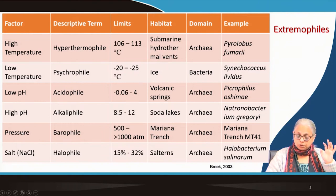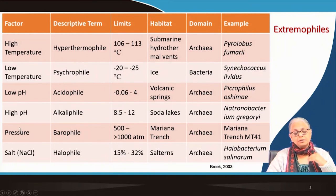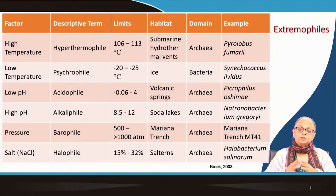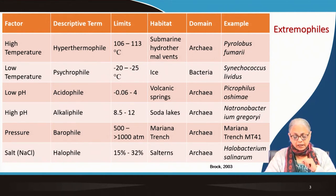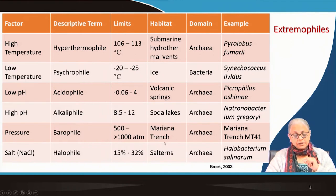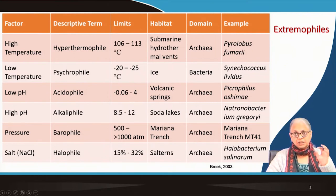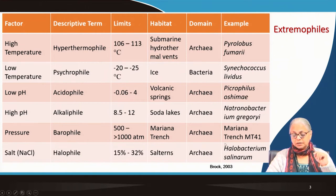At the bottom of the ocean, where hydrostatic pressure is extremely high, there are very few living organisms that can withstand those kinds of pressures. The number of organisms in the depths of the oceans is much, much less than at higher layers. These barophilic bacteria are capable of withstanding pressures of 500 to more than 1000 atmospheres. The Mariana's Trench, considered the deepest point on the planet, has bacteria found even there — it's an archaeobacteria named Mariana Trench MT 41.